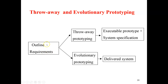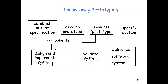There are two techniques: throw-away prototyping and evolutionary prototyping. Throw-away means you use a prototype to gather the requirements, and after finalizing the requirements you throw away the prototype and develop the system from the beginning. Evolutionary prototyping means you use the prototype to gather requirements and then evolve that prototype into the deliverable system — that is the key difference. In throw-away prototyping: establish outline specification, develop the prototype, evaluate it, specify the system, then design, implement, validate and deliver. The prototype is thrown away and the system is developed from the beginning.